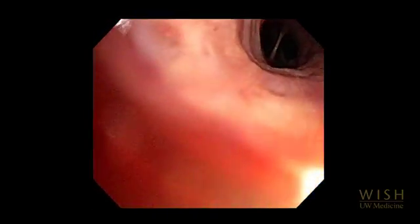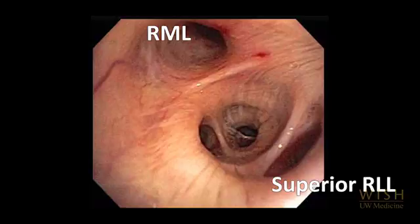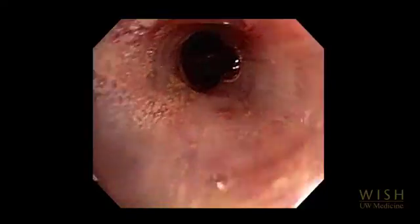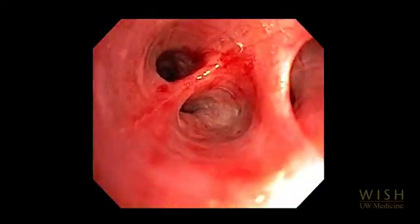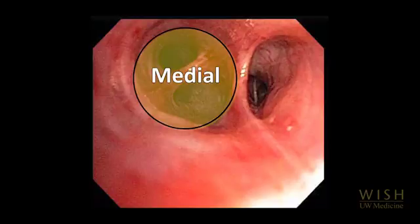The bronchoscope returns to the right main stem and then continues into the bronchus intermedius, which runs from right upper lobe takeoff to right middle lobe takeoff. The right middle lobe takes off anteromedially. The superior segment of the right lower lobe takes off posteriorly at the level of the right middle lobe bronchus. The medial basal segment takes off medially, and the right lower lobe bronchus continues distally.